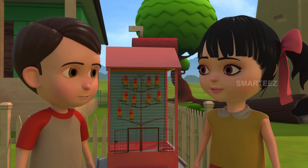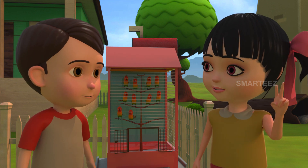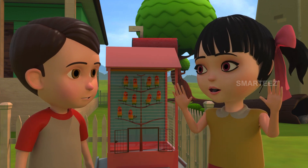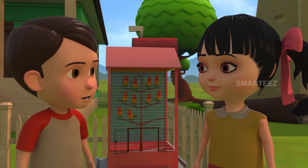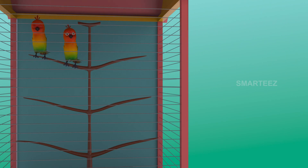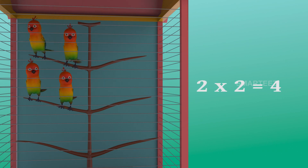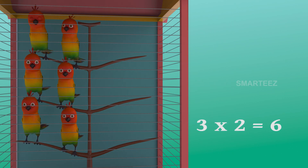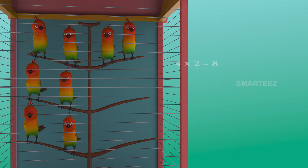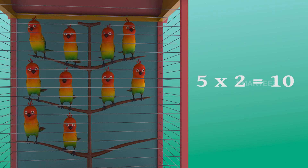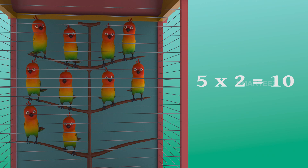There were eight in the cage already. Now there are two more making it ten. Yes, five twos make it ten. The first set had two parakeets. The second set of two were added, it became four. The third set of two parakeets made it six. The fourth set of two made it eight. Now the fifth set of two parakeets made it ten. So five sets of two parakeets made it ten parakeets.